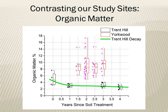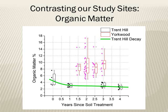Here I'm comparing organic matter levels in the soil over time from both Yorkwood and Trent Hill, with years since treatment moving forward on the x-axis. Trent Hill shows a clear exponential decay in organic matter. Three years after treatment at Trent Hill, the initial supply of compost has declined to a steady, reduced level maintained all the way through year seven. In contrast, our monitoring at Yorkwood shows that organic matter is not only higher, but holding steady through year three, with no evidence of the expected decay seen at Trent Hill.